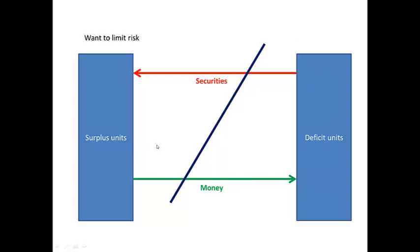Surplus units want to limit risk. They want to be sure that they'll be able to get their savings plus a return back in the future. While deficit units, the entrepreneurs in the economy, need to engage in risky ventures and are not always 100% sure that they are going to get their money back.